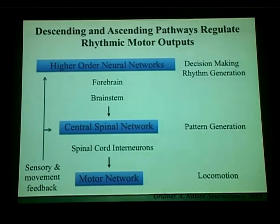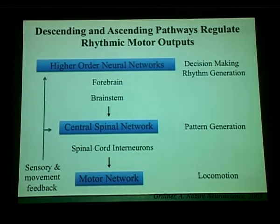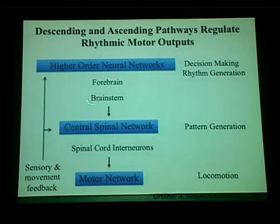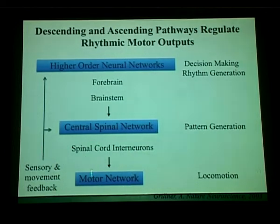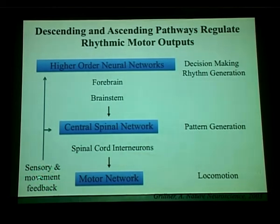Dr. Greiner has given a wonderful introduction about how motor circuits generate rhythmic motor outputs. So far, most of our knowledge came from electrophysiology studies of large invertebrates and pioneering vertebrate studies in lampreys. Basically, decision-making and rhythm generation seem to arise from higher-order neural networks in the forebrain and brainstem, which transduce signals to the central spinal cord network, generating central pattern generators that drive orchestrated muscle contractions. These can be entrained and modified by sensory inputs from internal and external environments.